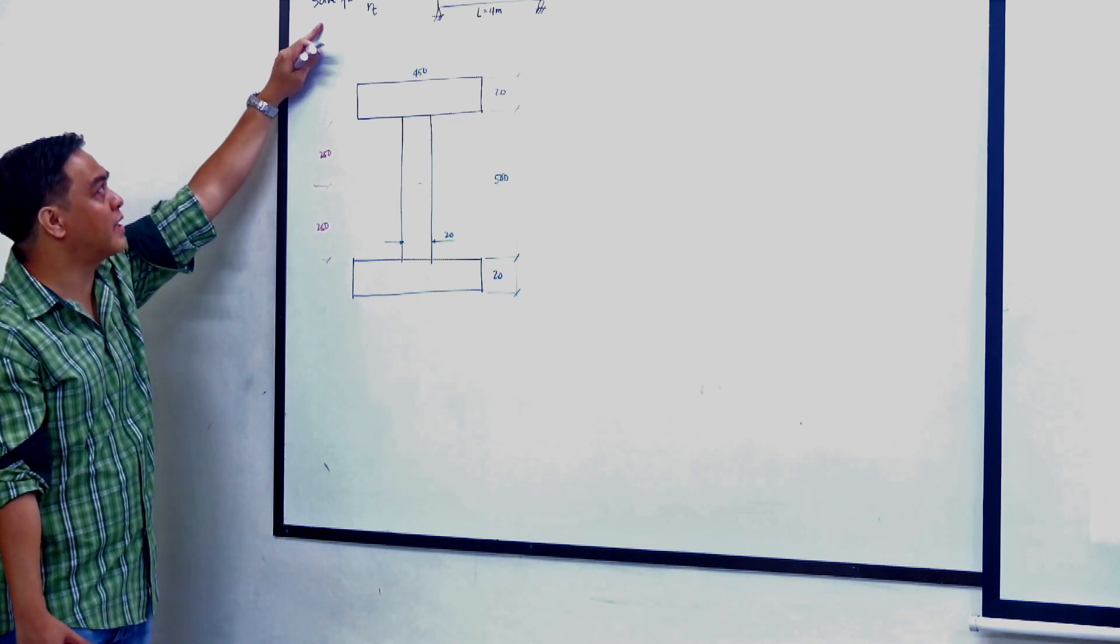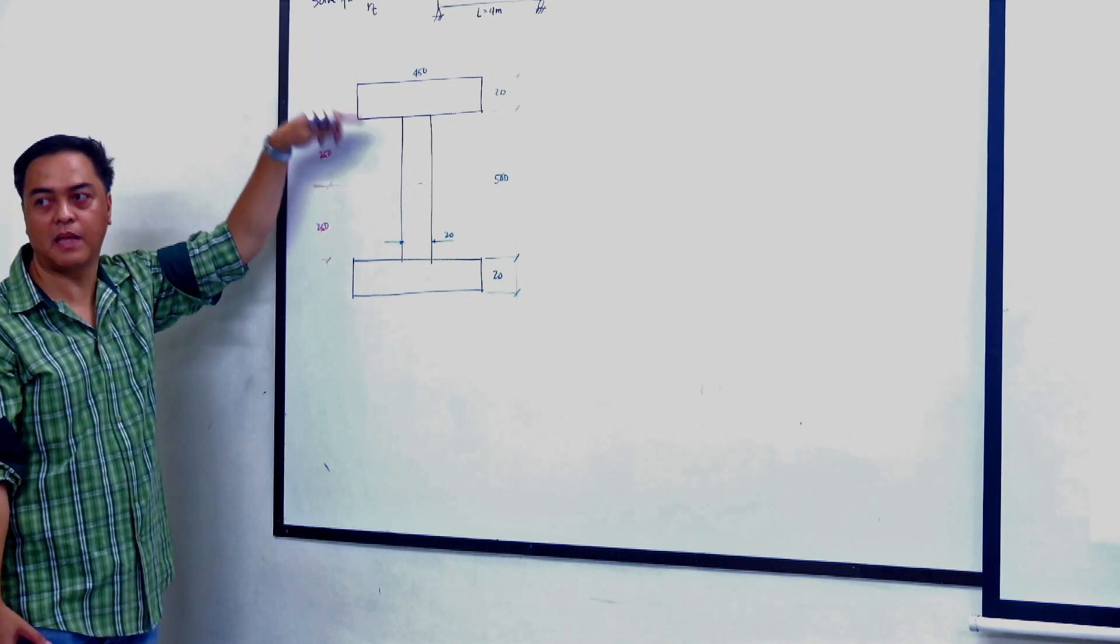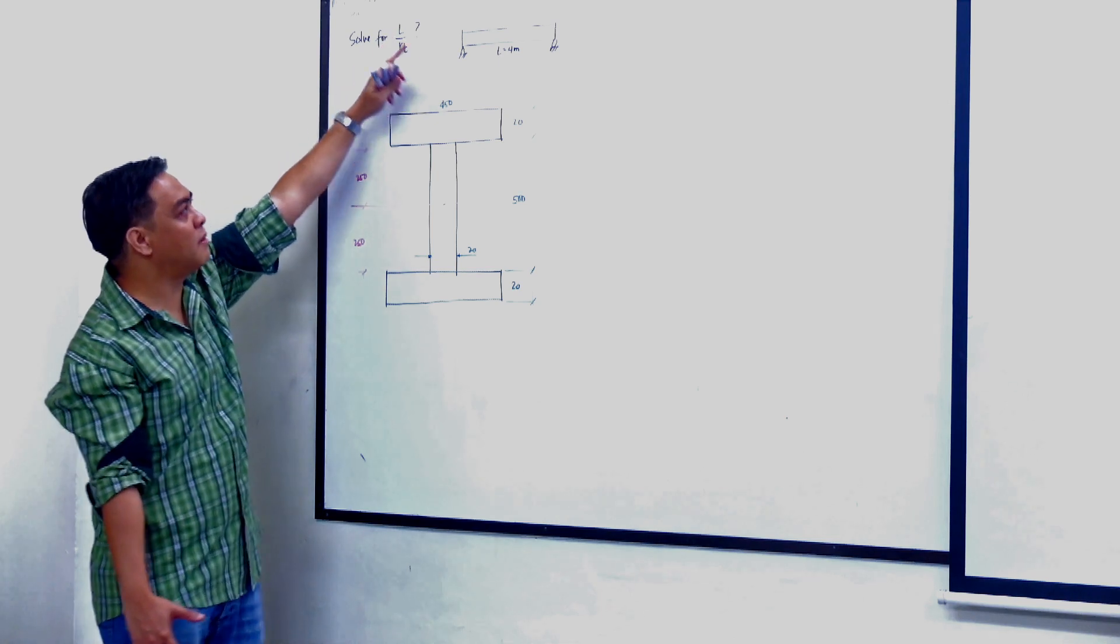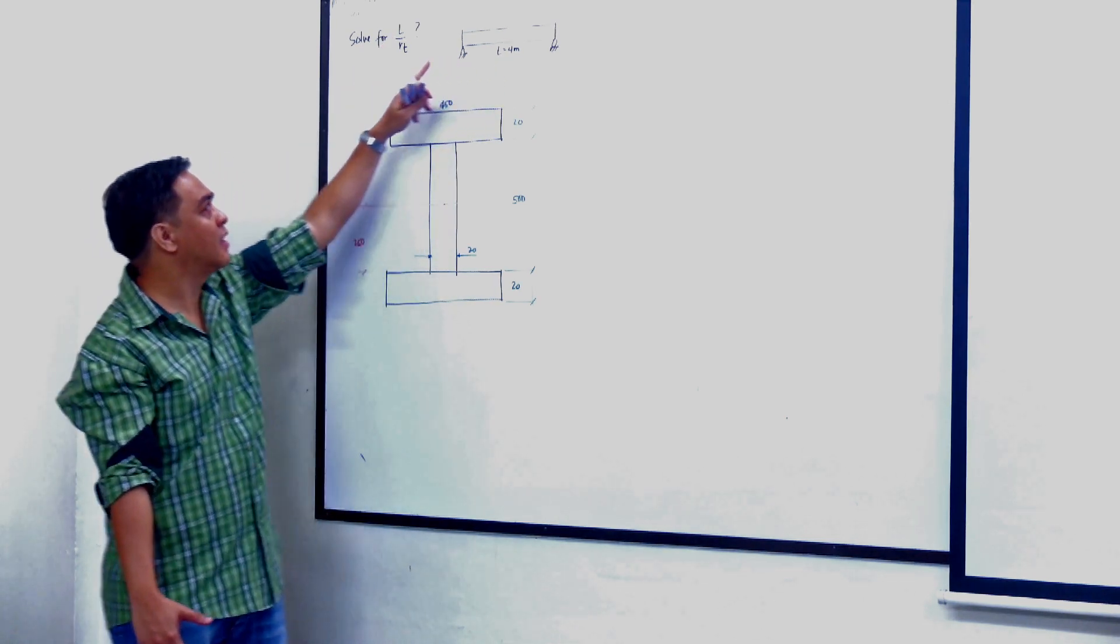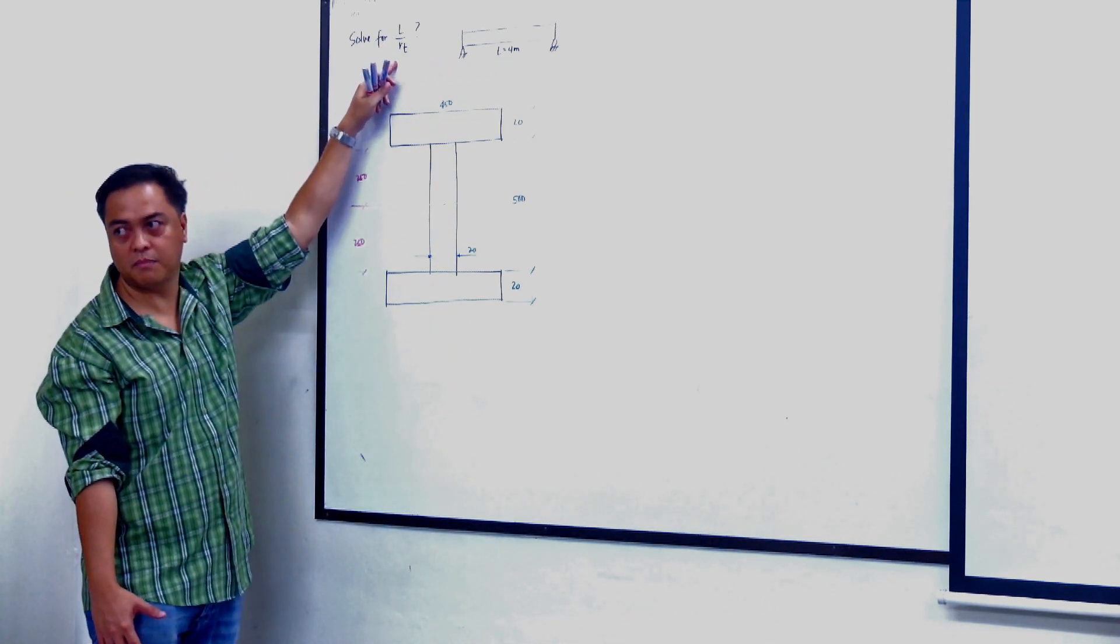We're asked to determine the slenderness ratio of this beam. The span L would be 4,000 millimeters. We just need to solve for the R sub D.